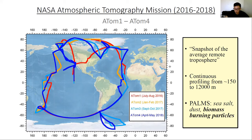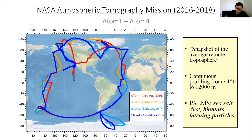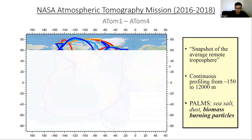PALMS is a single particle mass spectrometer that gives you aerosol composition. It's particularly good at detecting sea salt, dust, and biomass burning particles. PALMS is really sensitive and selective to biomass burning particles — it's a nice addition to the ATom payload. We learned a lot about biomass burning in the general remote troposphere.